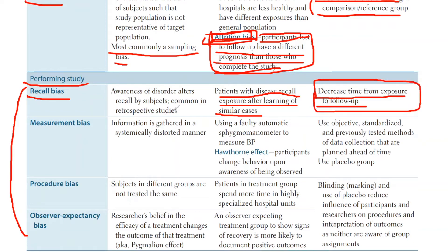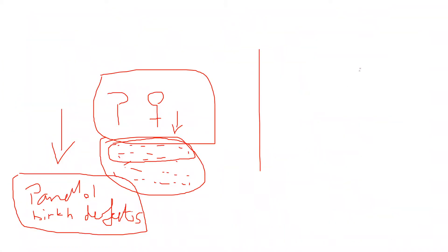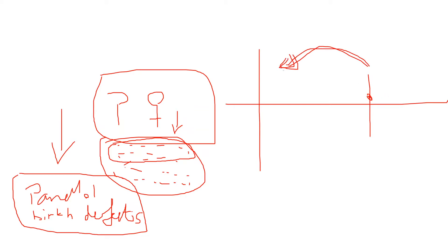This is obviously going to be common in retrospective studies, because at that point people have to go backwards in time and recall information — were you taking this, were you doing this — so recall bias is naturally more prevalent in retrospective study designs.